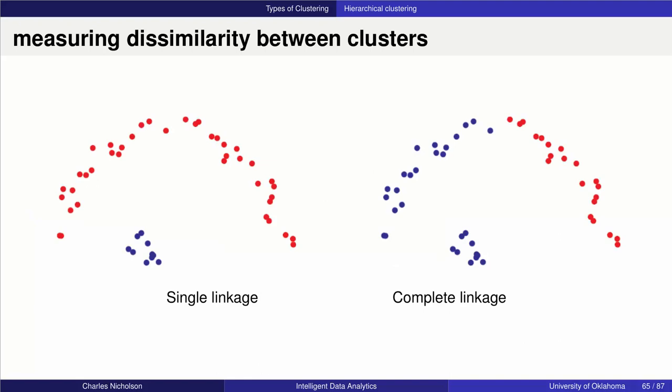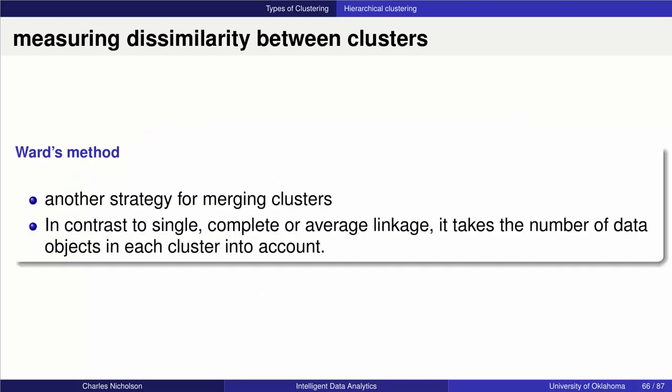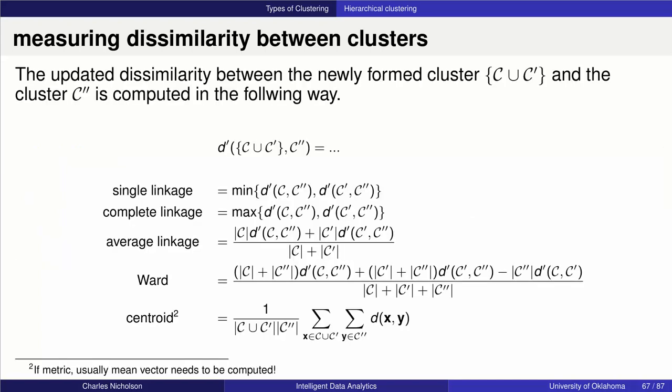There's another method called Ward's method. This method takes the number of objects being classified into a cluster into account and attempts to balance out your clusters. On this slide, I'm showing an example: if I take a cluster C combined with C-prime and look at how to possibly combine it with cluster C-double-prime, single linkage, complete linkage, average linkage, and centroid methods are the ones we've discussed conceptually. These are the formulas associated with those, as is the Ward function.